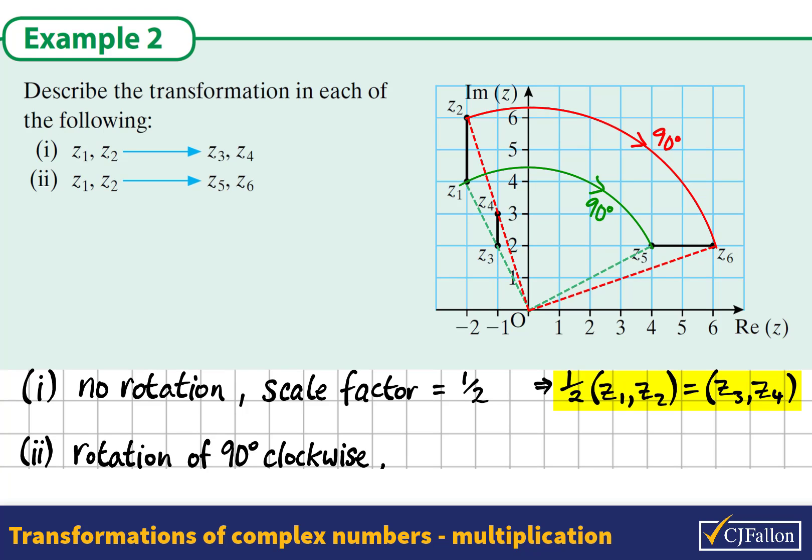Let's think about the scale factor. Well, there is no enlargement happening, so therefore the scale factor is 1. The moduli have not increased or decreased. So if we multiply Z1 and Z2 by negative i, it should map onto Z5 and Z6.